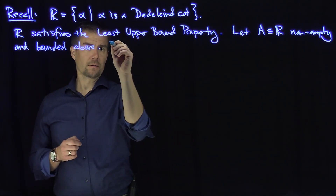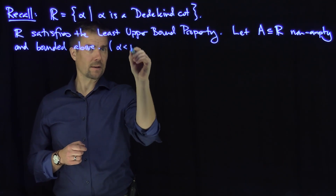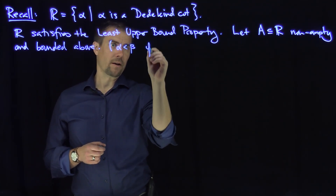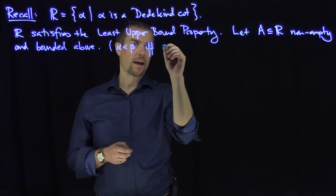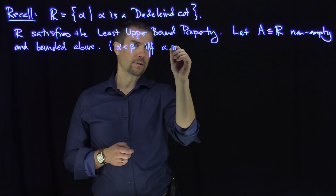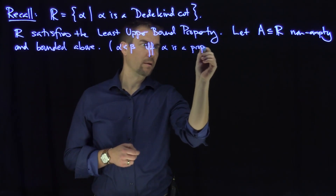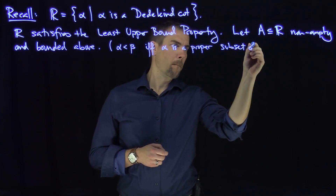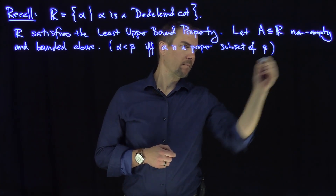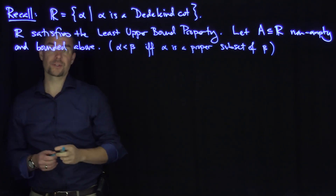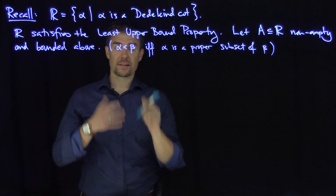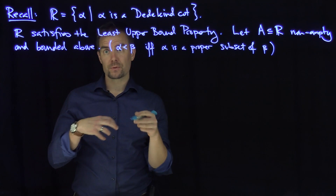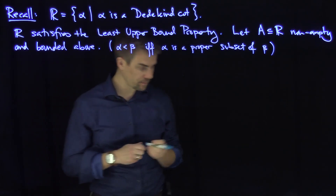Remember, we say that alpha is less than beta — so one real number is less than another real number — if and only if alpha is a proper subset of beta. That's our notion of what less than means. Of course, alpha equals beta means those two sets are identical to each other.